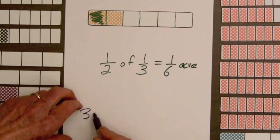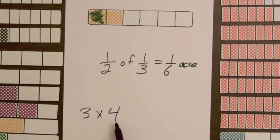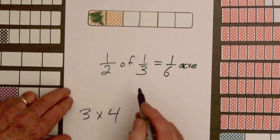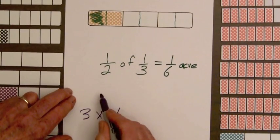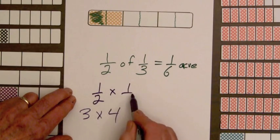One part shaded also gives us one-sixth of an acre. Now when multiplying whole numbers, say three times four, this means three of the fours. Similarly, when multiplying fractions one-half of one-third, we write this as one-half times one-third.